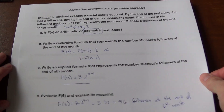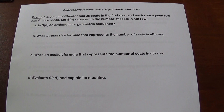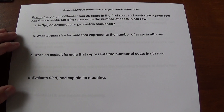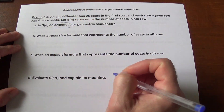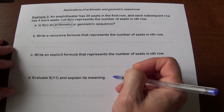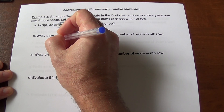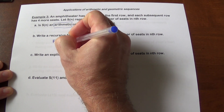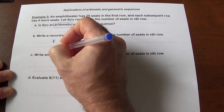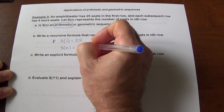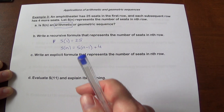An amphitheater has 25 seats in the first row, and each subsequent row has 4 more seats. Let s of n represent the number of seats in the nth row. Is this arithmetic or geometric? Each time you go up by 4 — the same number added each time — so it's going to be an arithmetic sequence. For the recursive formula: s of 1 is going to be 25, and s of n is going to be the previous term plus 4.